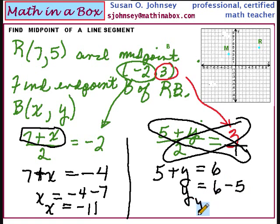So the coordinates for B are negative 11, 1. This is our B. I hope that helps you today get through your lessons for finding the midpoint. If you have questions, you can always find me at mathinabox.com. I answer email 350 days at least out of the year. s-johnsey at mathinabox.com. Thank you.